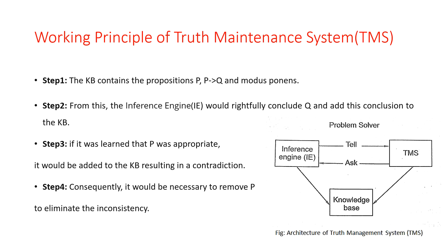There are different steps in the truth maintenance system. Step one: the knowledge base contains propositions P implies Q and the modus ponens rule. So if P is true and P implies Q is true, then we can conclude that Q is also true. Step two: from this, the inference engine would rightfully conclude Q and add this conclusion to the knowledge base, since P is true and P implies Q is true, therefore Q is true by modus ponens.